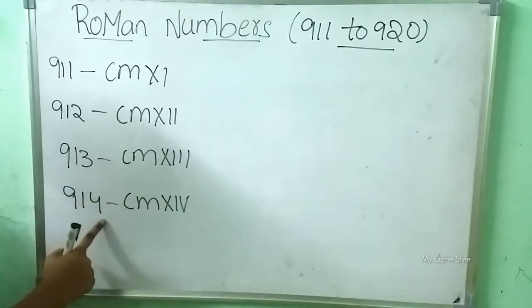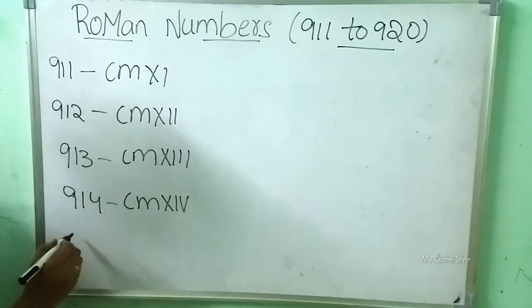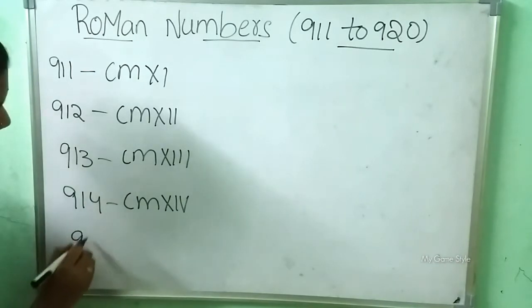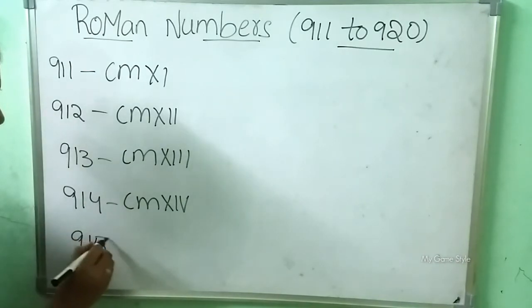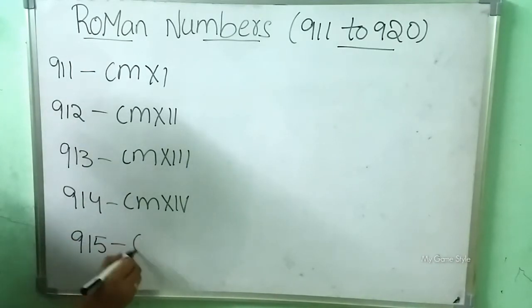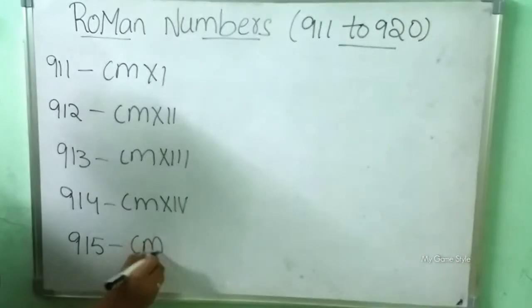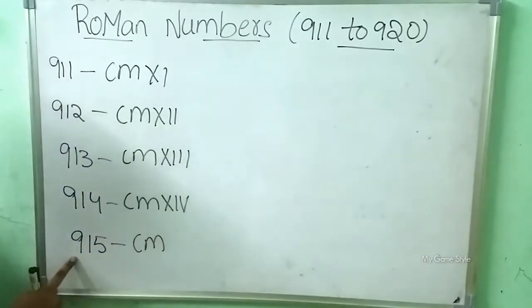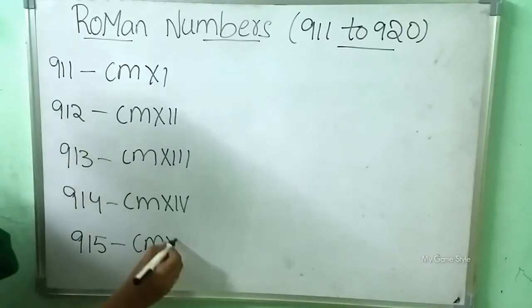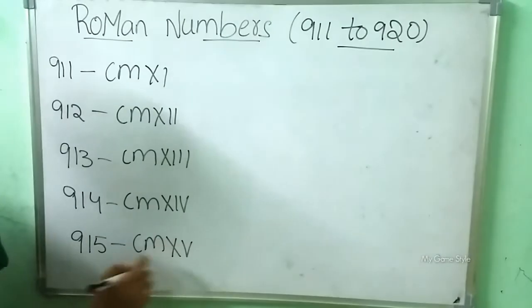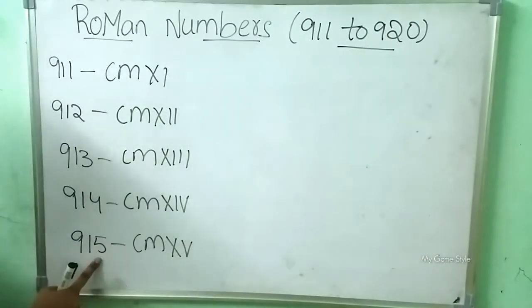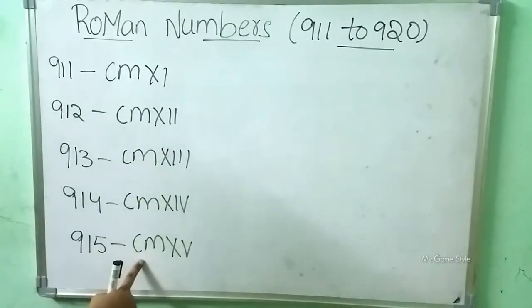After 914, what number will come? 915. Now how to write? CM is 900. XV is 15. So this means 915, written as CMXV.